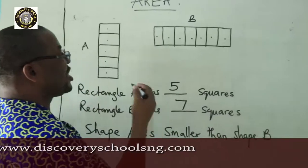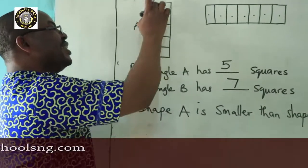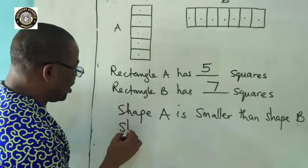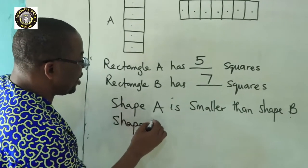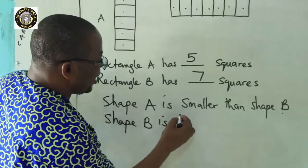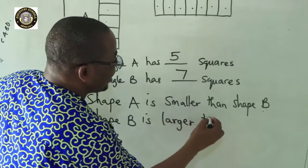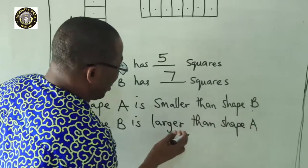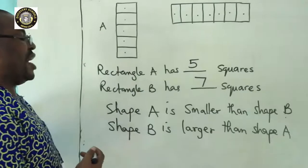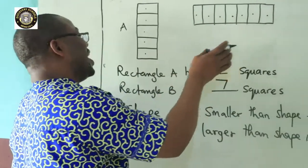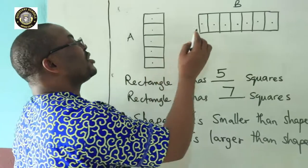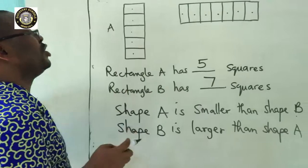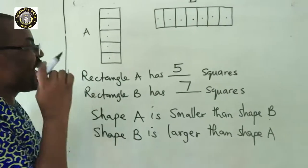Why is shape A smaller than shape B? Because shape A has lesser squares than shape B. And we can also say shape B is larger than shape A. It's larger or you can use bigger than shape A. Why is shape B bigger than shape A?